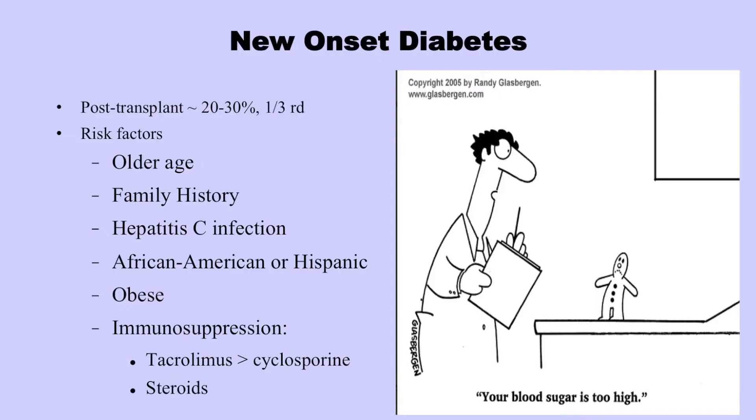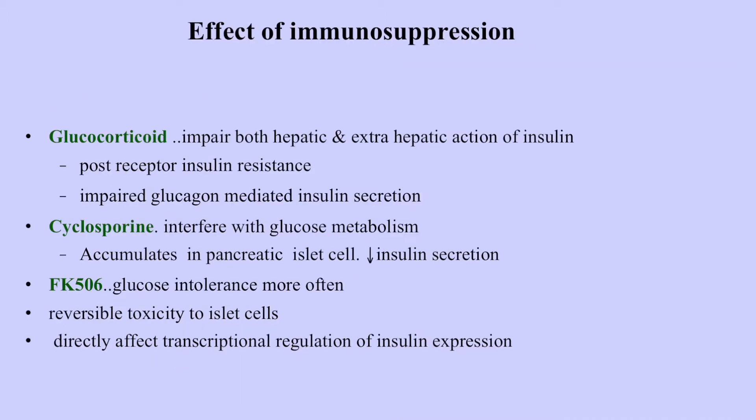So new-onset diabetes — we have all seen them in the clinic. Post-transplant, 20 to 30 percent of patients can have new-onset diabetes. The risk factors are older age, family history, hepatitis C infection, being obese, and immunosuppression also plays a role. Glucocorticoids — your steroids — impair both hepatic and extra-hepatic action of insulin, and they also cause post-receptor insulin resistance. Cyclosporine and Prograf also have reversible toxicity to the islet cells, and they directly affect the transcriptional regulation of insulin expression.